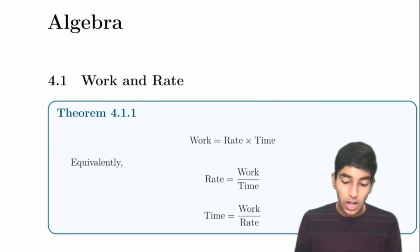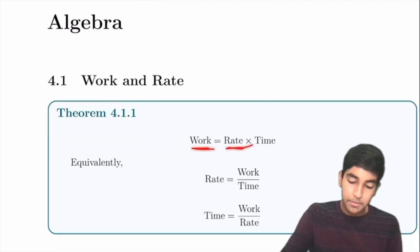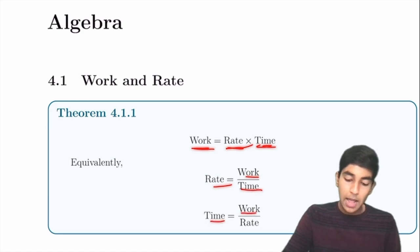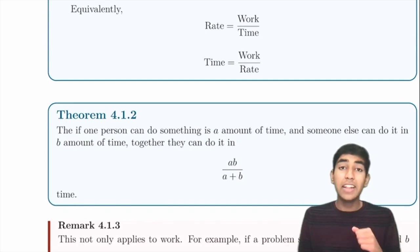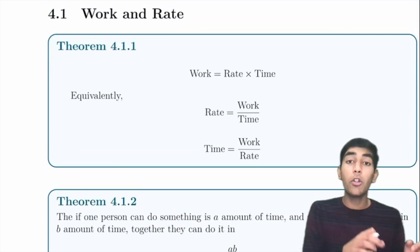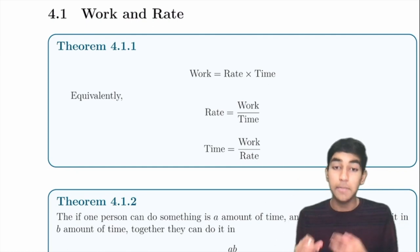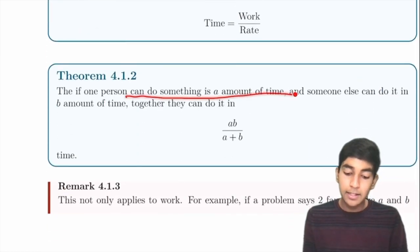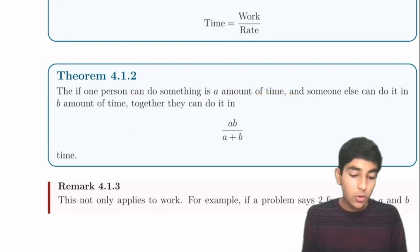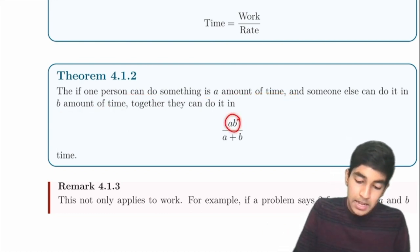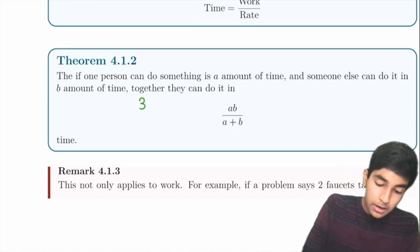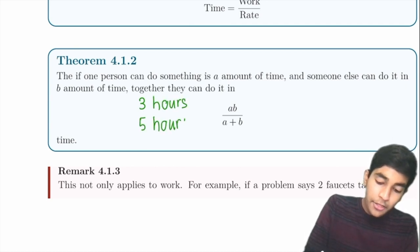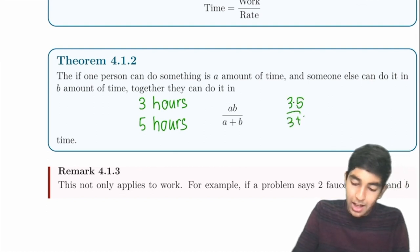Now algebra. Work = rate × time; rate = work / time; time = work / rate. If one person does a job in A hours and another in B hours, together they finish in AB/(A+B) hours. For example, someone finishing in 3 hours and another in 5 hours together finish in 3×5/(3+5) = 15/8 hours.